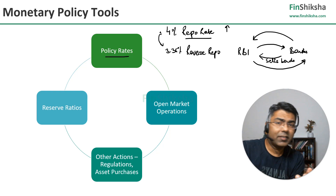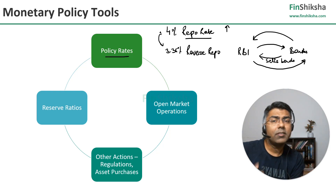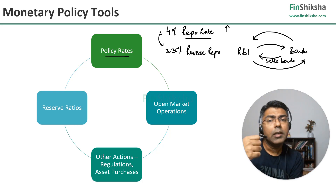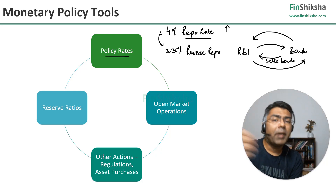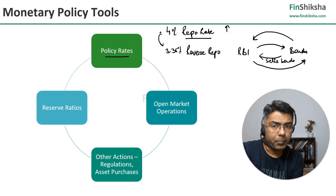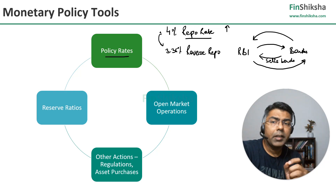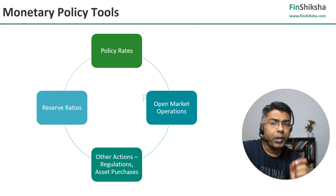Once again, these are signaling mechanisms because RBI is telling the banking system: I am increasing rates or I am cutting rates, please do the same at the back end with your customers as well. That's the idea of the repo rate.